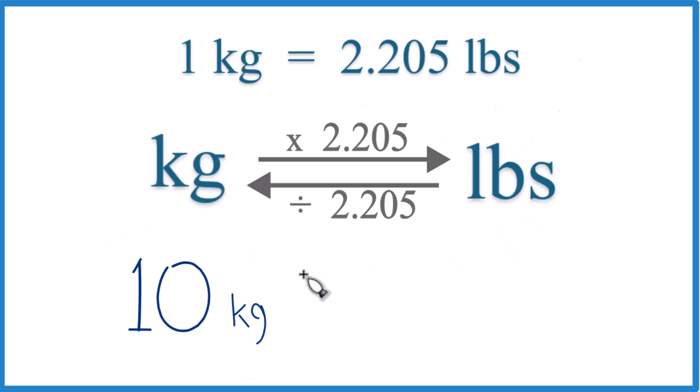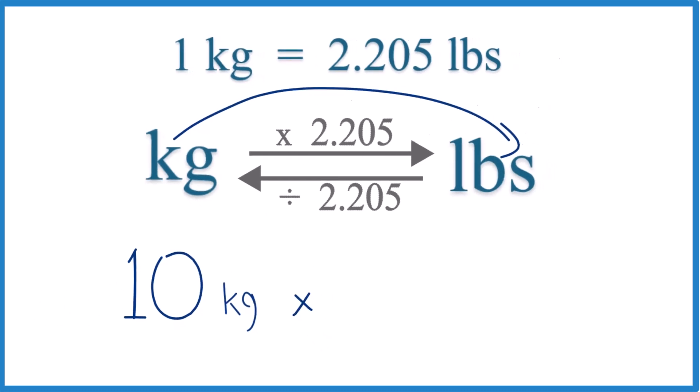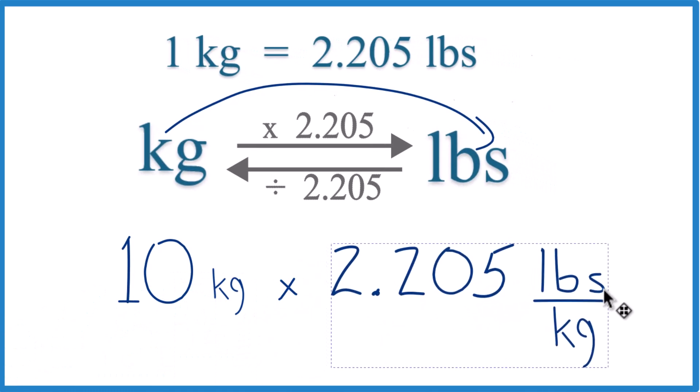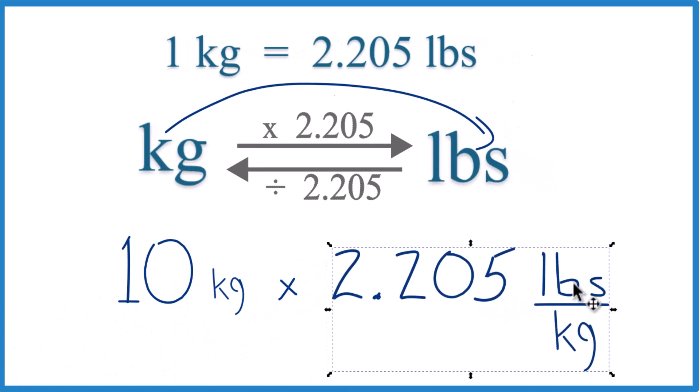So since we have 10 kilograms, we're going from kilograms to pounds here. We're going to multiply by 2.205, and that's pounds per kilogram. That comes from our conversion factor.